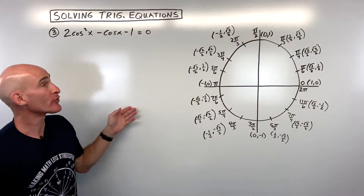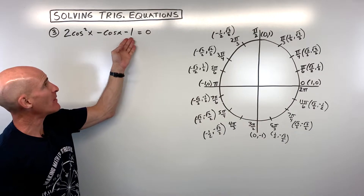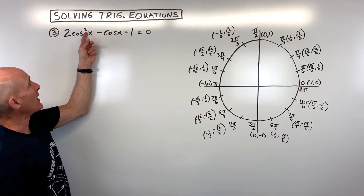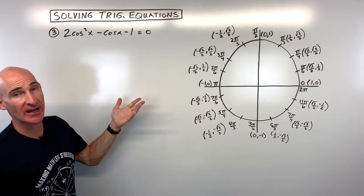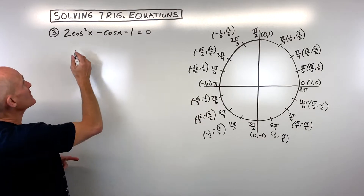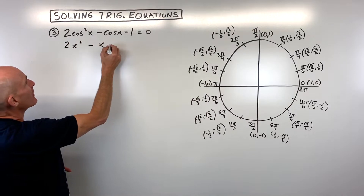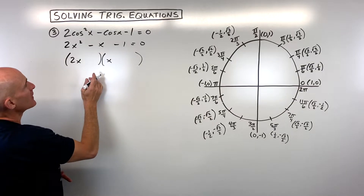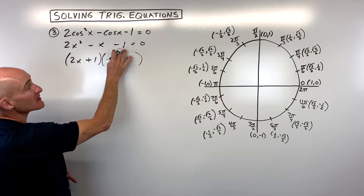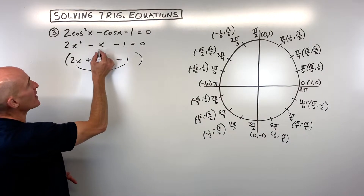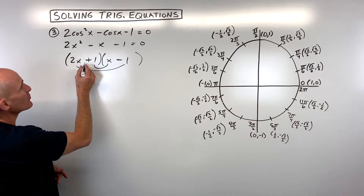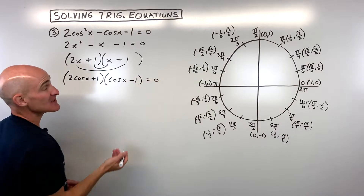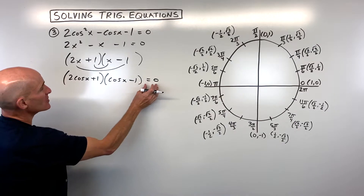For example number three, we have two cosine squared x minus cosine x minus one equals zero. This is like a trinomial with a quadratic term and a linear term, so we can factor it into two binomials. Think of it like two x squared minus x minus one: two x times x gives the squared term, and negative one and positive one multiply to negative one while the inner and outer terms add to the middle. Replacing x with cosine x, we get two cosine x plus one times cosine x minus one equals zero.